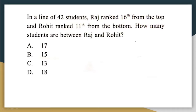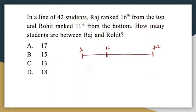In a line of 42 students, Raj is ranked 16th from the top and Rohit is ranked 11th from the bottom. How many students are there between Rohit and Raj? There is a line of students standing like this. This is the student whose rank is 1 and this is the student whose rank is 42. Raj is here — Raj is 16th rank from the top. Similarly, Rohit is 11th rank from the bottom, so he is the 11th from this side.